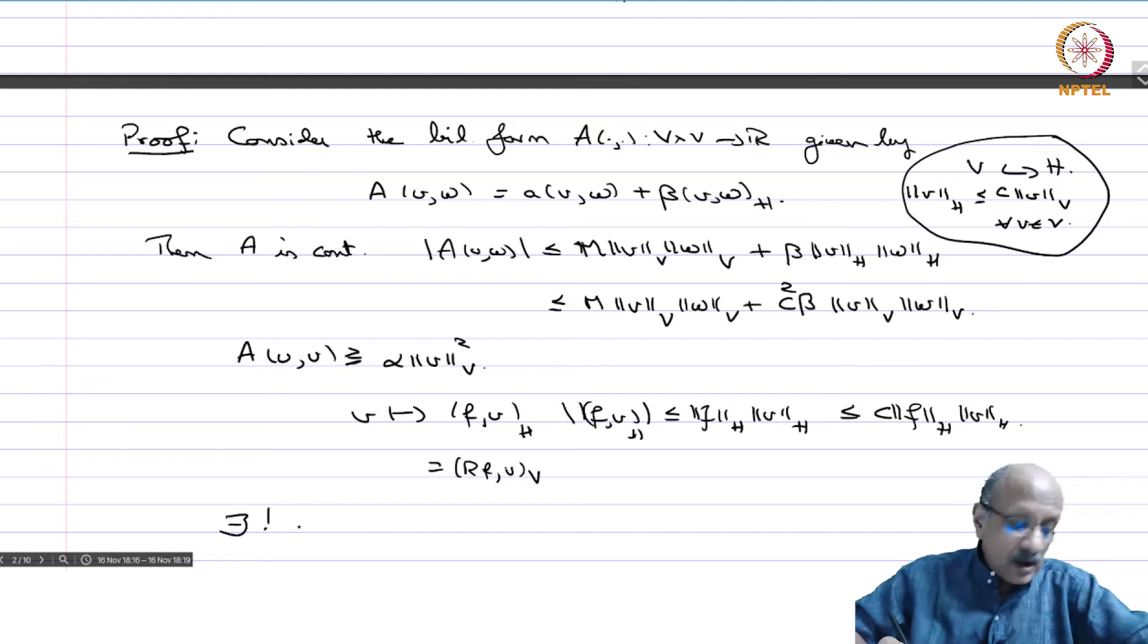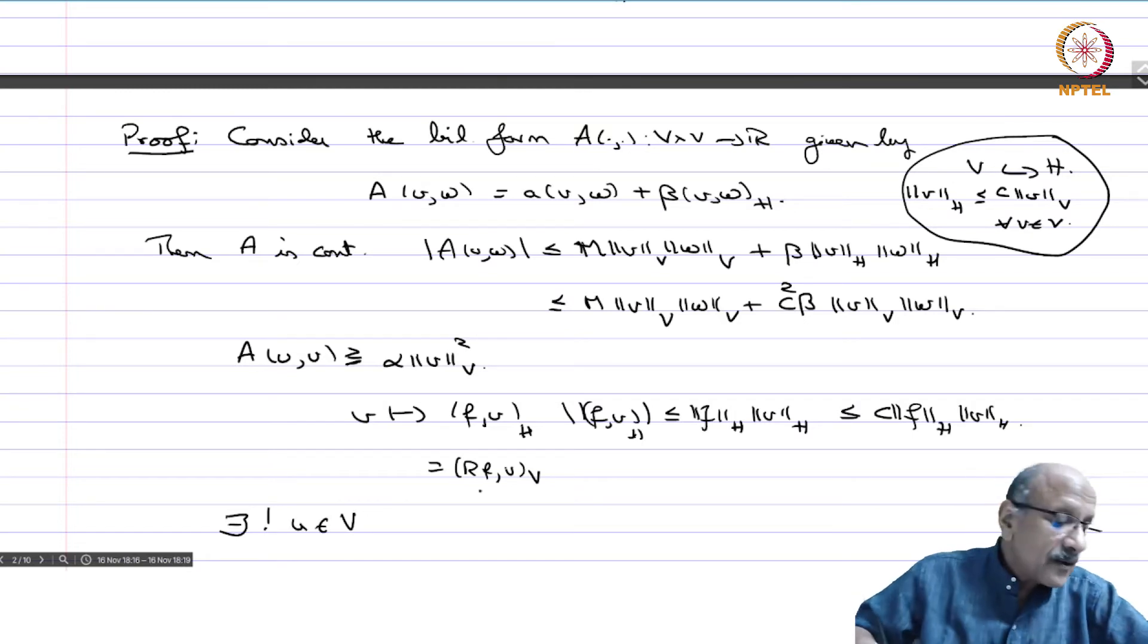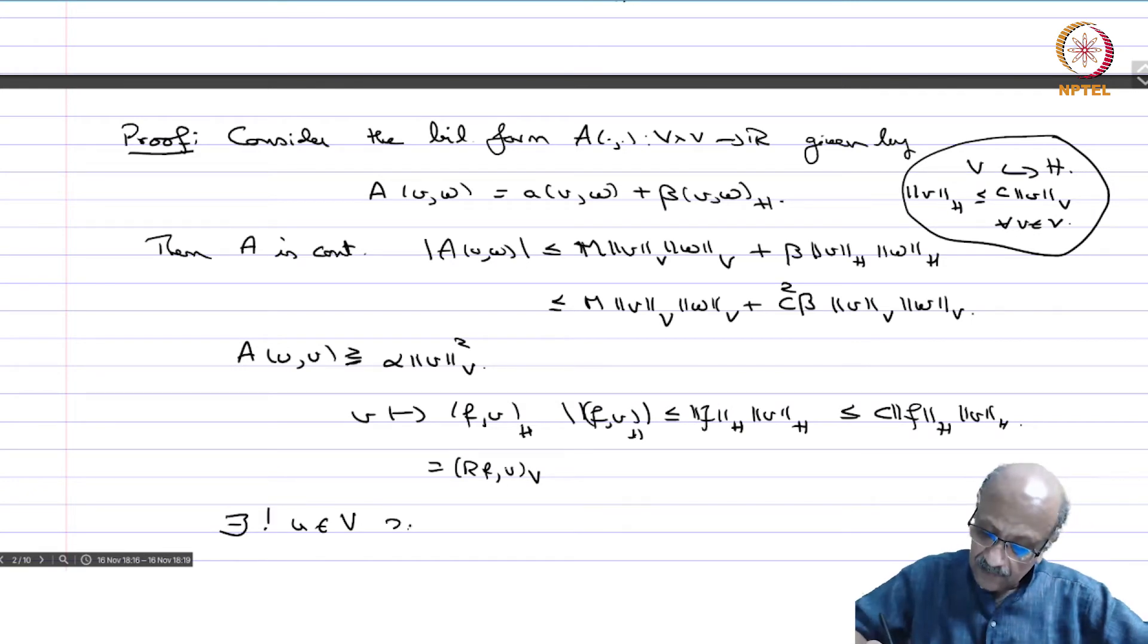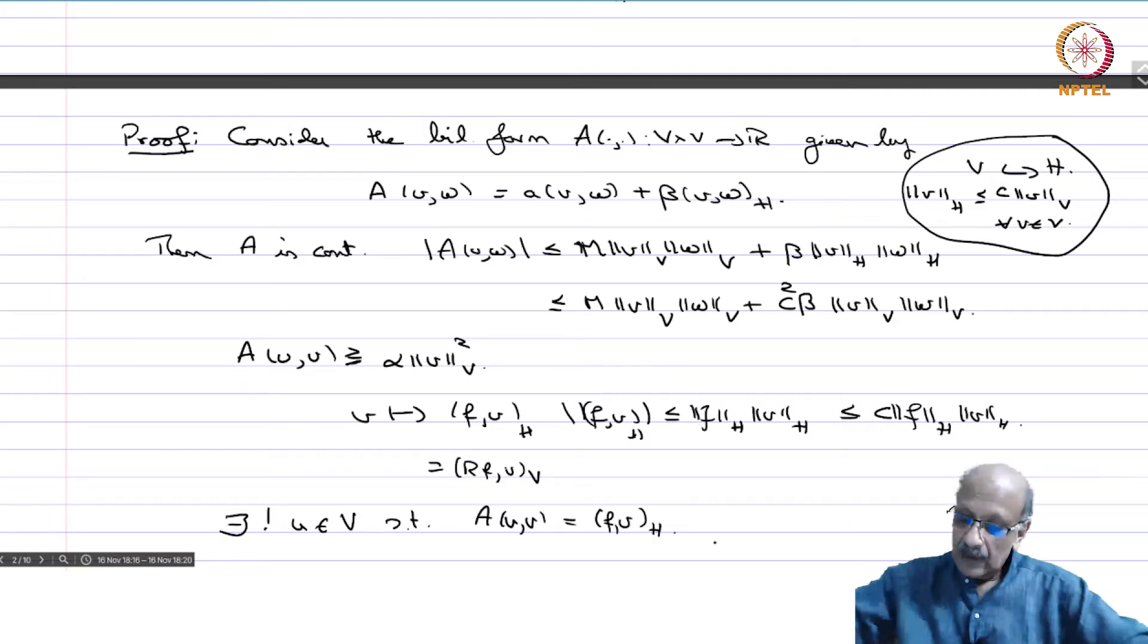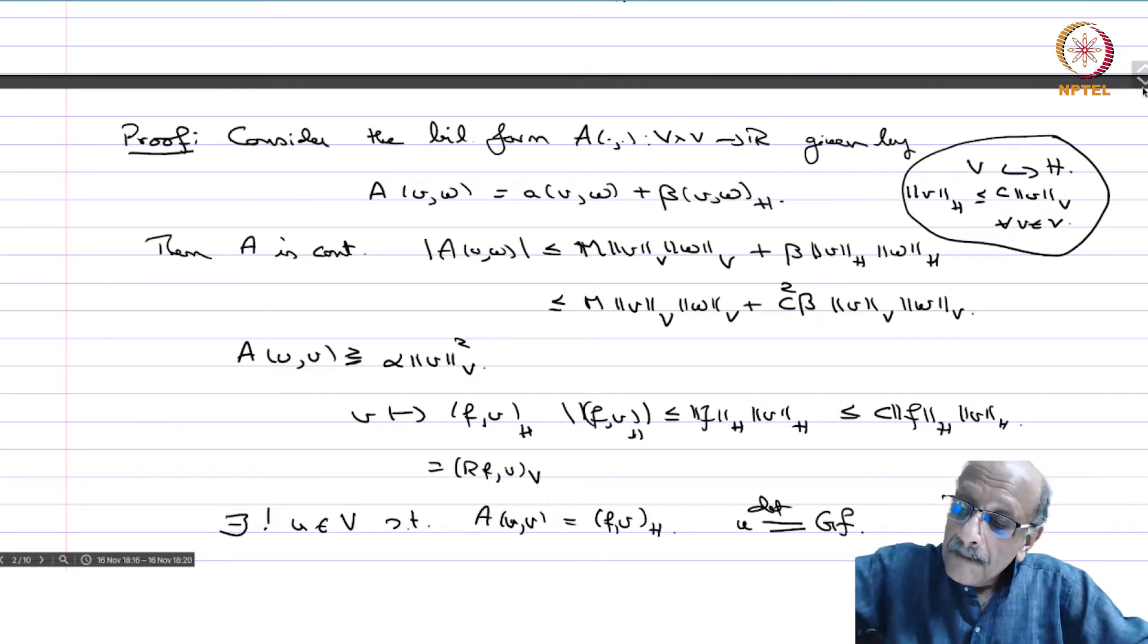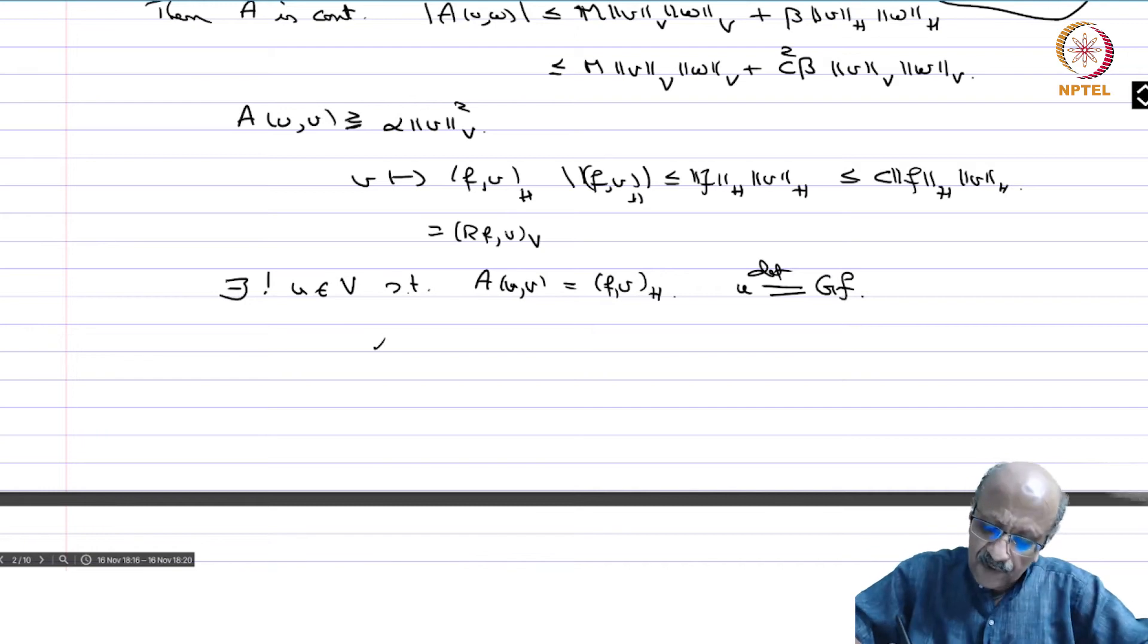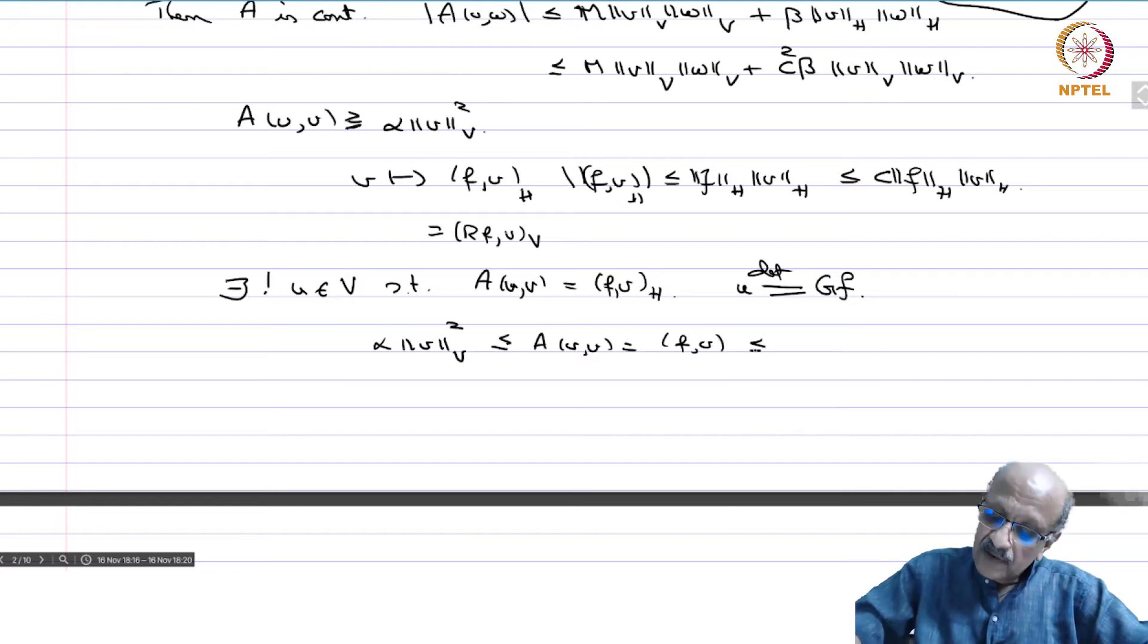There exists a unique u in V such that A(u,v) = F(v) in H. I'm going to call u = G(F). Then α||u||²_V ≤ A(u,u) = F(u) ≤ C||F||_H||u||_V.